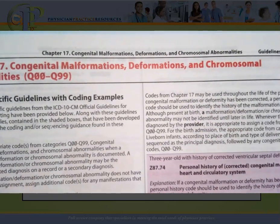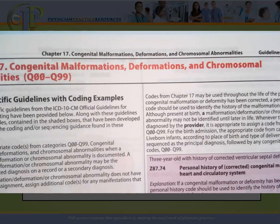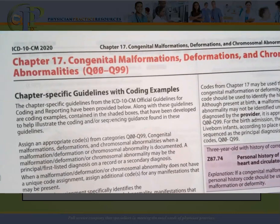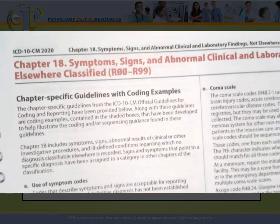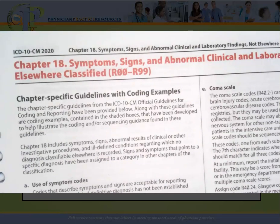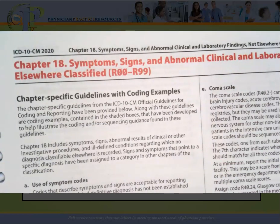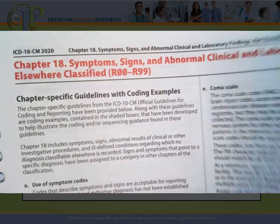Chapter seventeen covers congenital malformations, deformations, and chromosomal abnormalities — codes starting with Q. Chapter eighteen covers codes related to symptoms, signs, and abnormal clinical and laboratory findings, not elsewhere classified. If you remember earlier when I was going through the guidelines, I showed you section one B four — those were the guidelines for coding signs and symptoms. What I want you to see is that before you even start looking up codes, you really want to take the opportunity to read through the guidelines first.